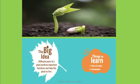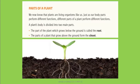What we are basically going to learn from this chapter is that different parts of a plant perform important functions and help the plant to live. Like our body has different parts, the plant also has different parts and each part performs a different function. Today we are going to see about parts of a plant.